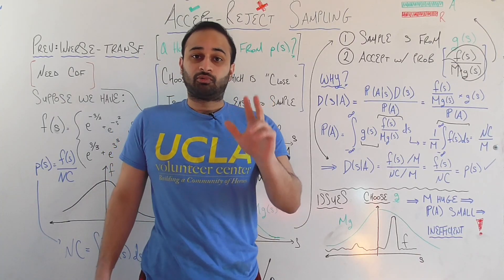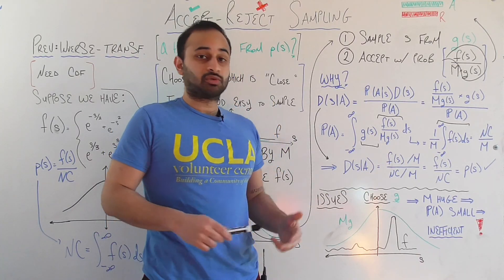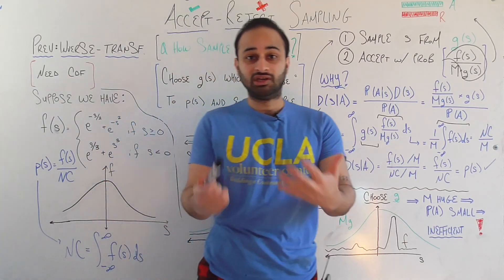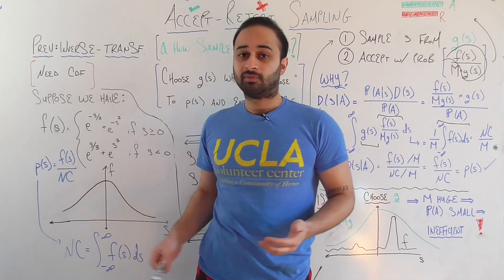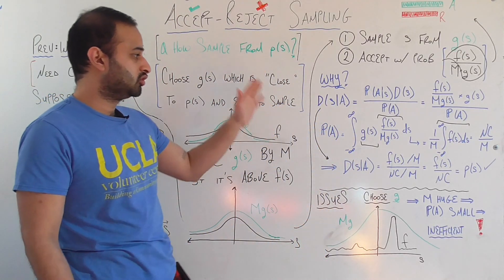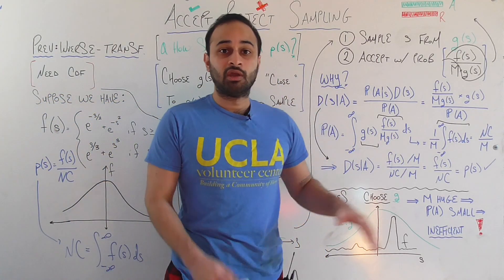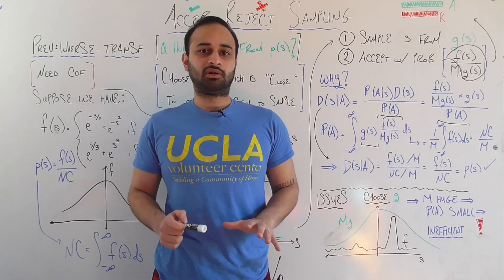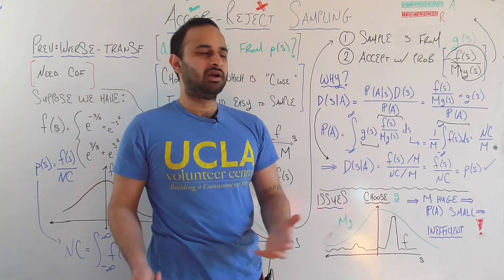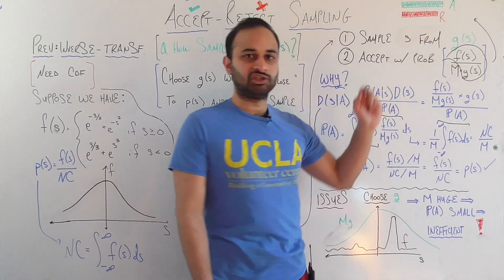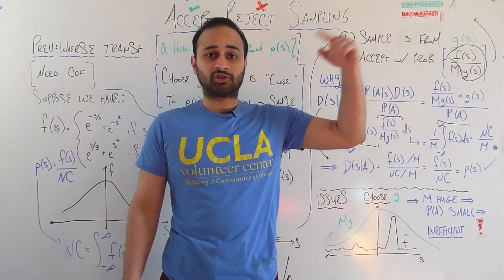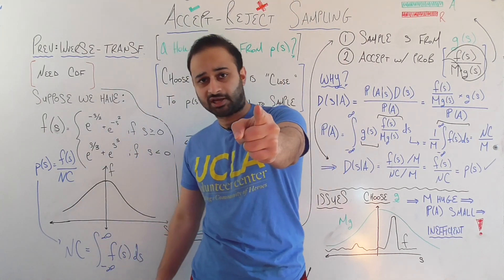So that was accept-reject sampling, or rejection sampling. Hopefully I've shown you why we need it instead of inverse transform sampling in many real-world cases, how it works, that it works mathematically, and most importantly, why it works intuitively — it all comes down to the F over G ratio. If you learned something, please like and subscribe. Any comments are always welcome below, and I'll see you next time.